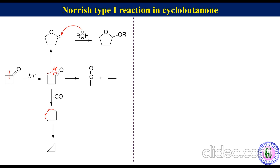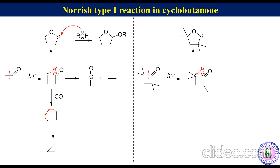In cyclobutanones and more rigid cyclopentanone and cyclohexanone ring systems, ring expansion is predominant. For example, when 2,2,4,4-tetramethylcyclobutanone is irradiated in methanol, it undergoes alpha cleavage to produce an acyl-alkyl diradical which undergoes ring expansion to produce an oxacarbene, which is then attacked by a methanol molecule to produce 5-methoxy-2,2,4,4-tetramethyltetrahydrofuran as the major product.